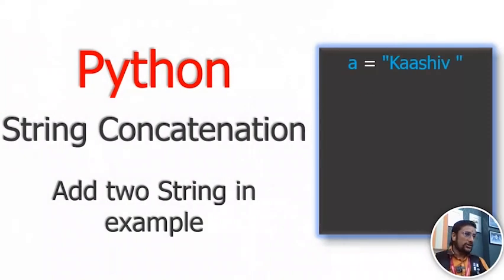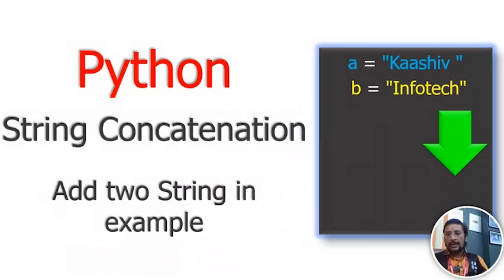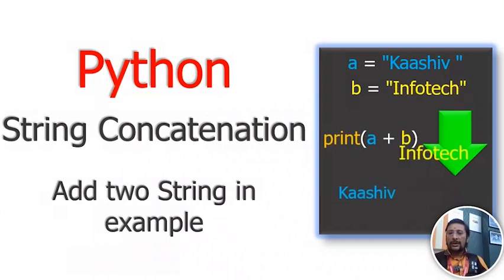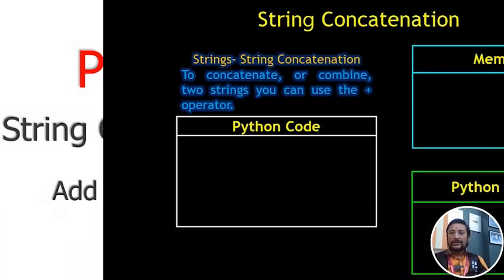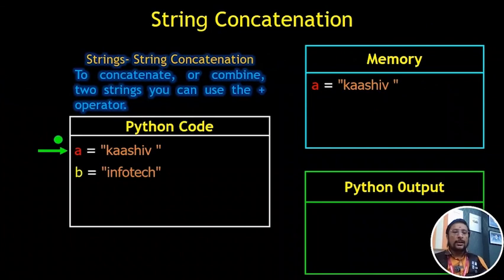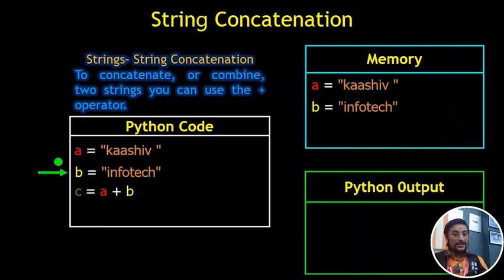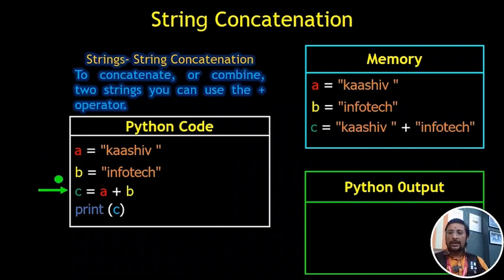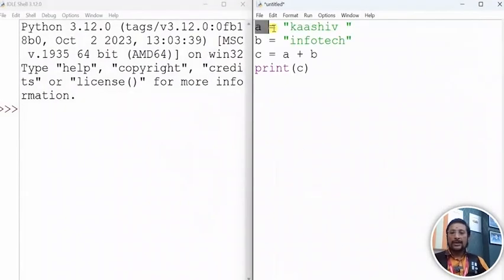Now we are going to see concatenation. Concatenation means joining two strings. A is equal to 'CASHU', B is equal to 'InfoTech', and we use the plus operator. C equals A plus B, which will automatically print 'CASHU InfoTech'. You can run it with the run module.